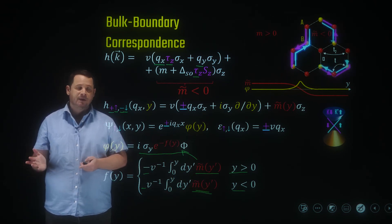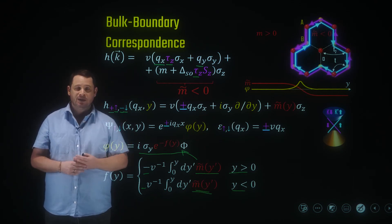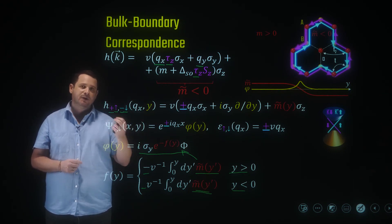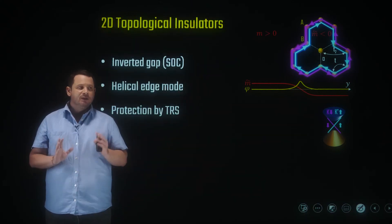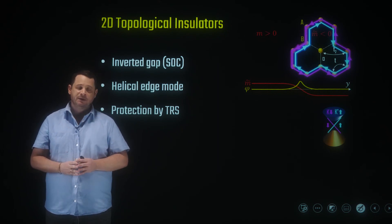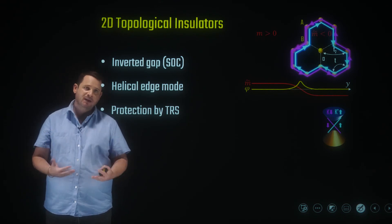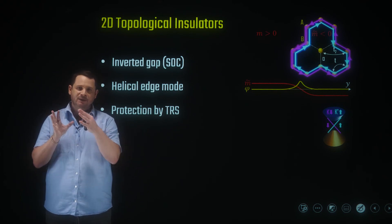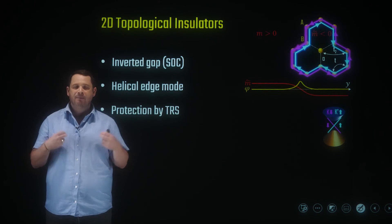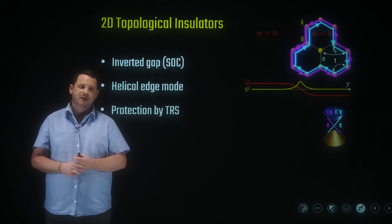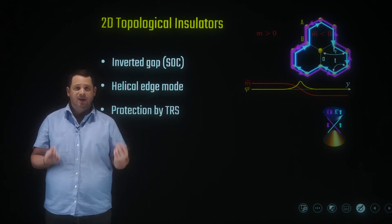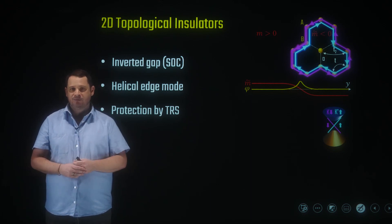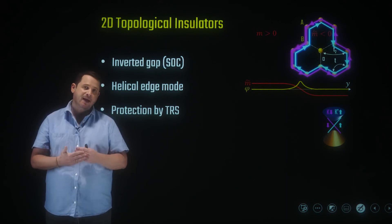To summarize: the characteristics of the two-dimensional topological insulator are that by inducing a negative gap, possibly by spin-orbit coupling, we must obtain helical edge modes. This is the bulk-boundary correspondence between the topological inverted gap of the bulk and the exotic, unique boundary modes on the edges — which in this case are helical edge modes. These are just two time-reversed copies of the Haldane model, and they remain protected as long as we keep time-reversal symmetry. If we break time-reversal symmetry, they can mix and hybridize with each other and gap out. These are the properties of the two-dimensional topological insulator.